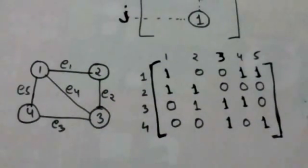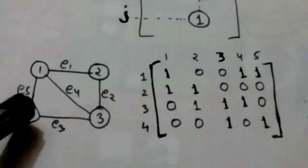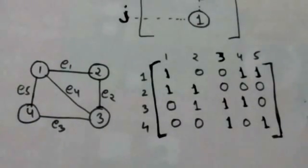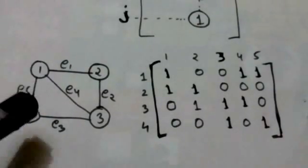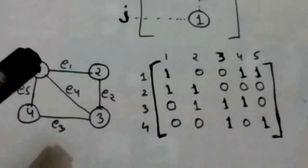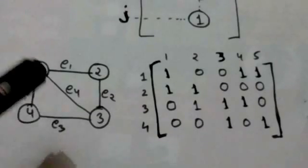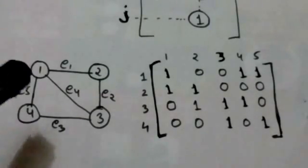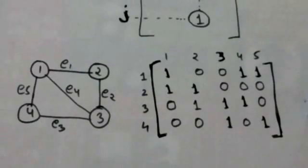For example, see this graph. The incidence matrix of this simple graph is shown here. Since there are four vertices and five edges in this graph, therefore the incidence matrix of this graph is a 4 cross 5 matrix.